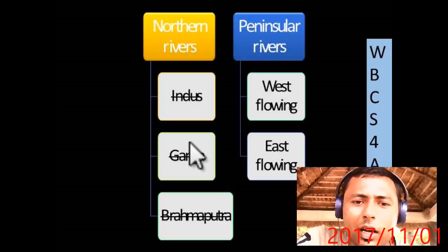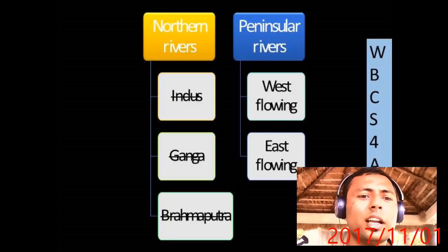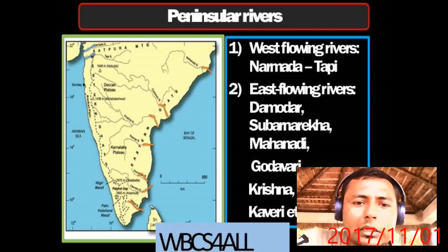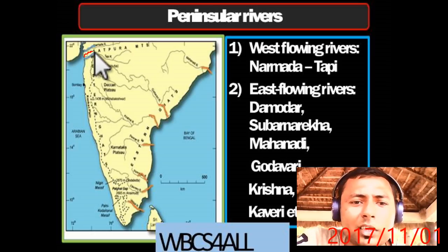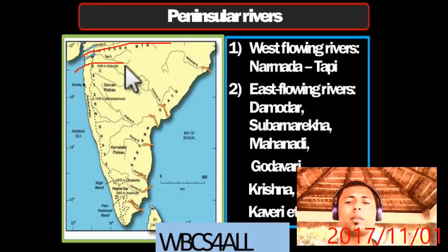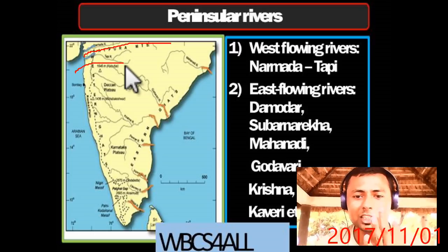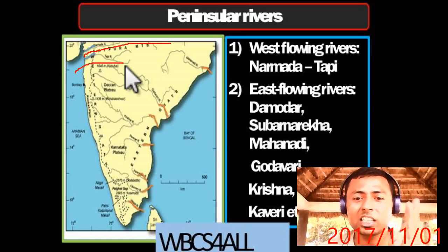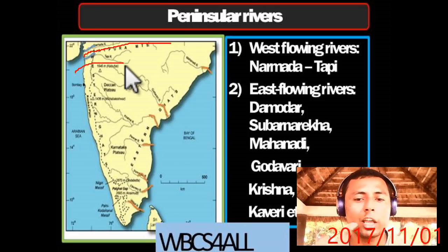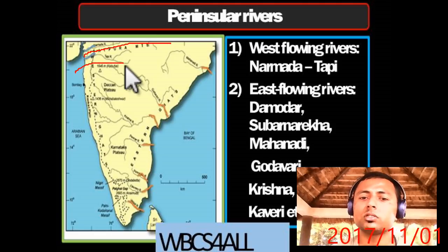The Brahmaputra river system ends now. We will move to west flowing and east flowing rivers of peninsular India. In peninsular India there are only two major west flowing river systems: Narmada and Tapi. Three main rivers — Narmada, Son, and Mahanadi — all originated from Amarkantak plateau. Narmada flows westward, Mahanadi eastward, and Son northward.